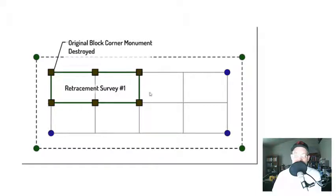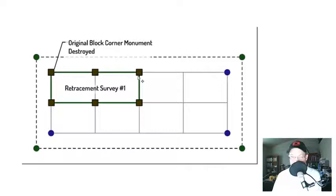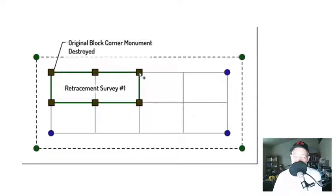Now let's talk about the difference between these five monuments here and this one monument in the corner — they're slightly different. These five monuments are marking original corners on the subdivision map, but they are retracement monuments because they weren't set on the original survey. Legally, these monuments are not without error. If you find the northeast corner of lot two two feet out of position from the record position, and you have reason to believe the surveyor made an error, this monument will not control.